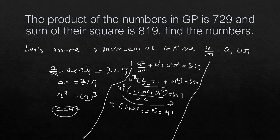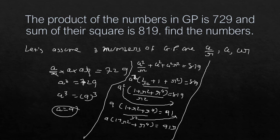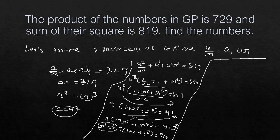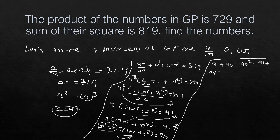Multiplying through: 9(1 + r² + r⁴) = 91·r². Let t = r². So 9(1 + t + t²) = 91t. Expanding: 9 + 9t + 9t² = 91t. Rearranging: 9t² + 9t − 91t + 9 = 0, which gives 9t² − 82t + 9 = 0.